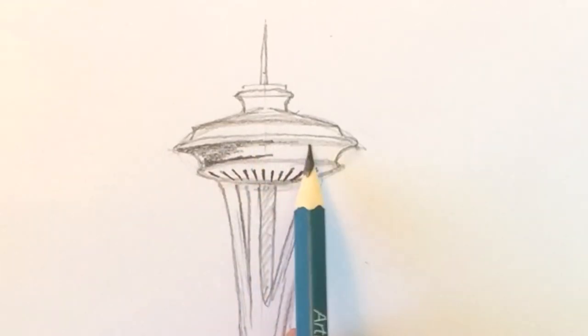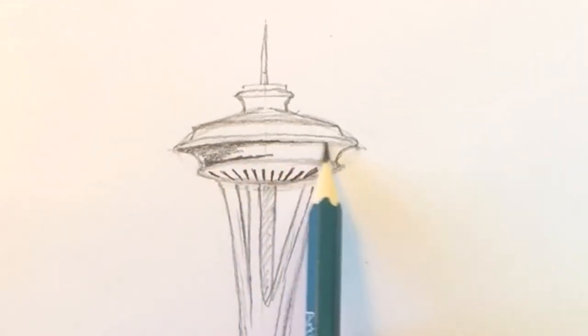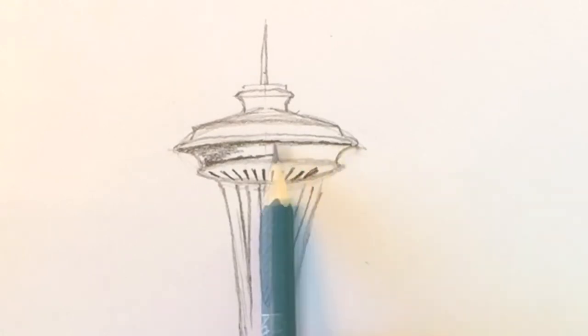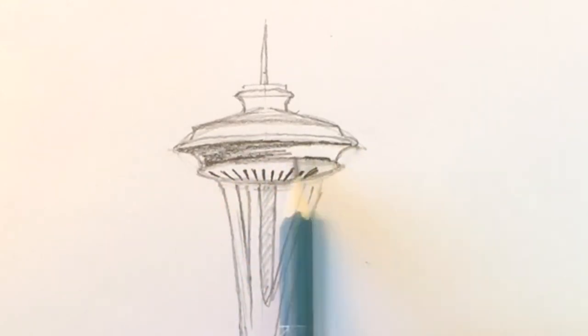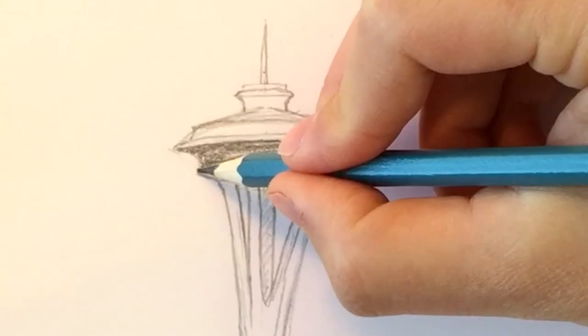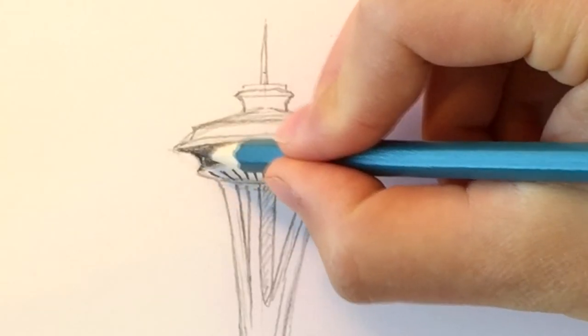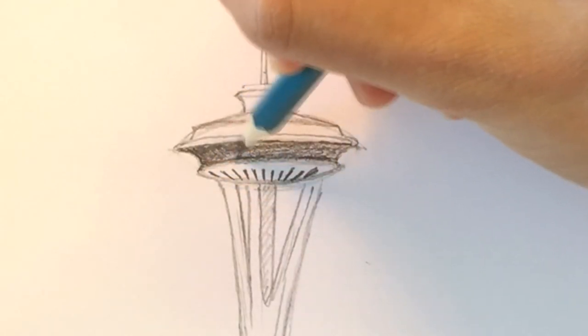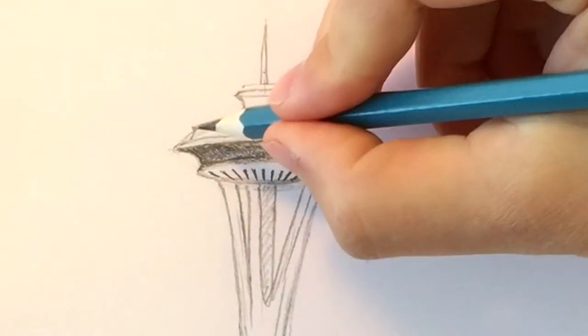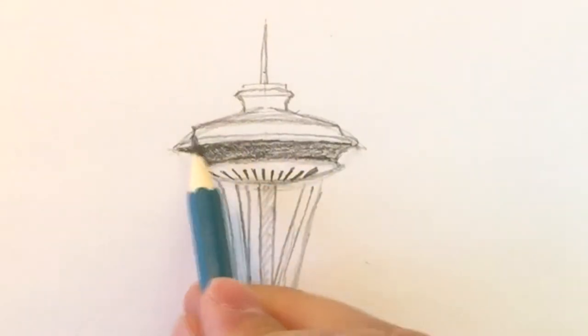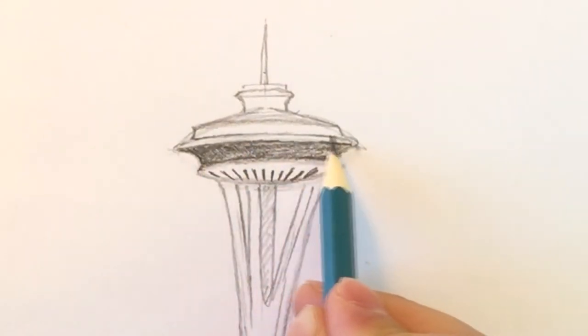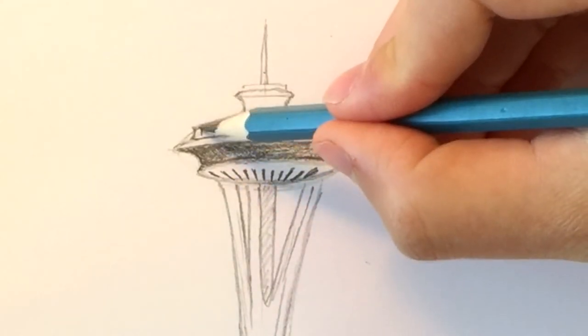You see that for the shading, I color around the line a little darker than the rest. And the left side of the building will also be darker because of the shadow. And then this is for the observation deck. We have some windows.